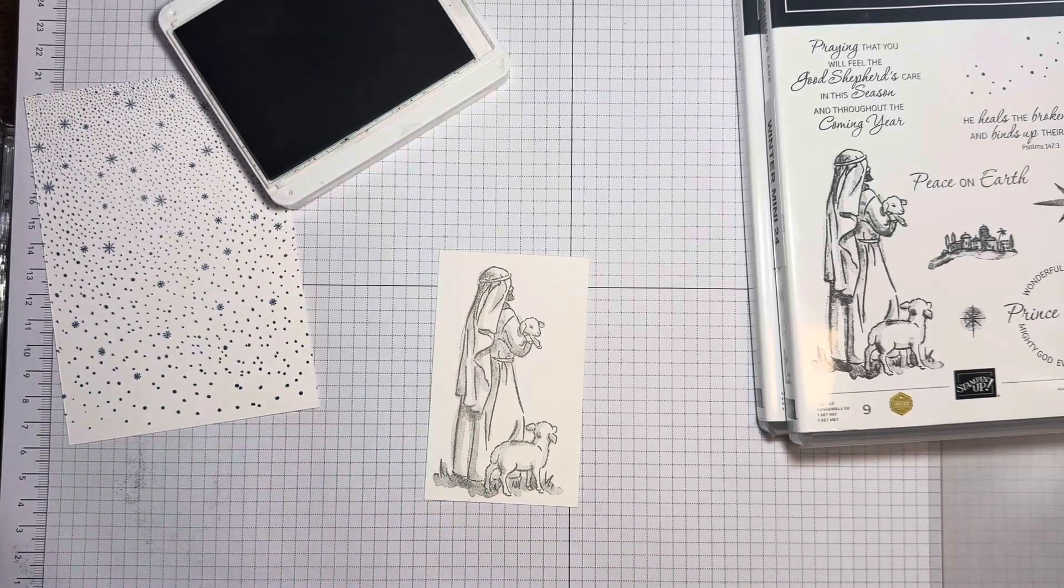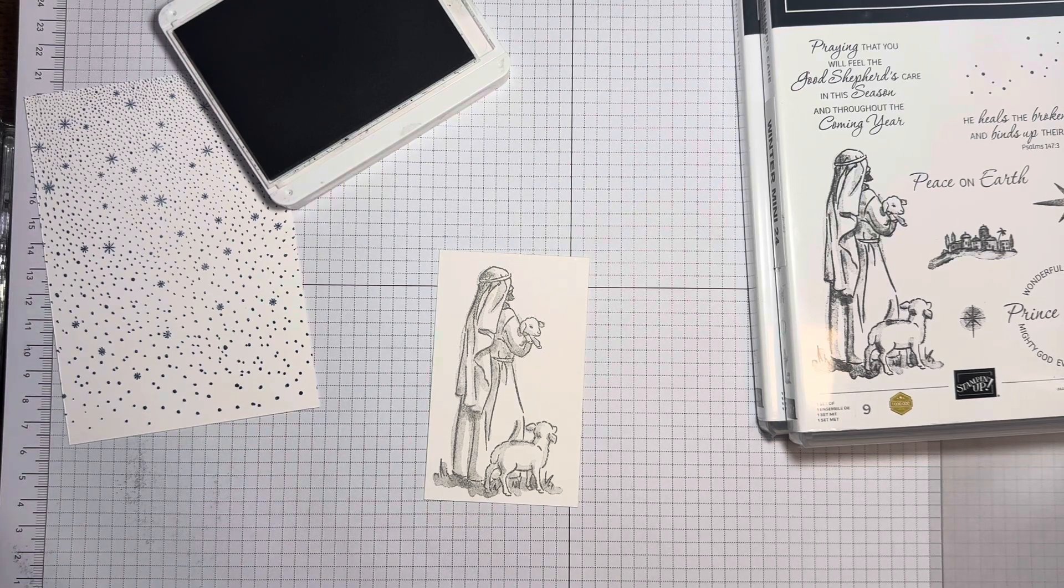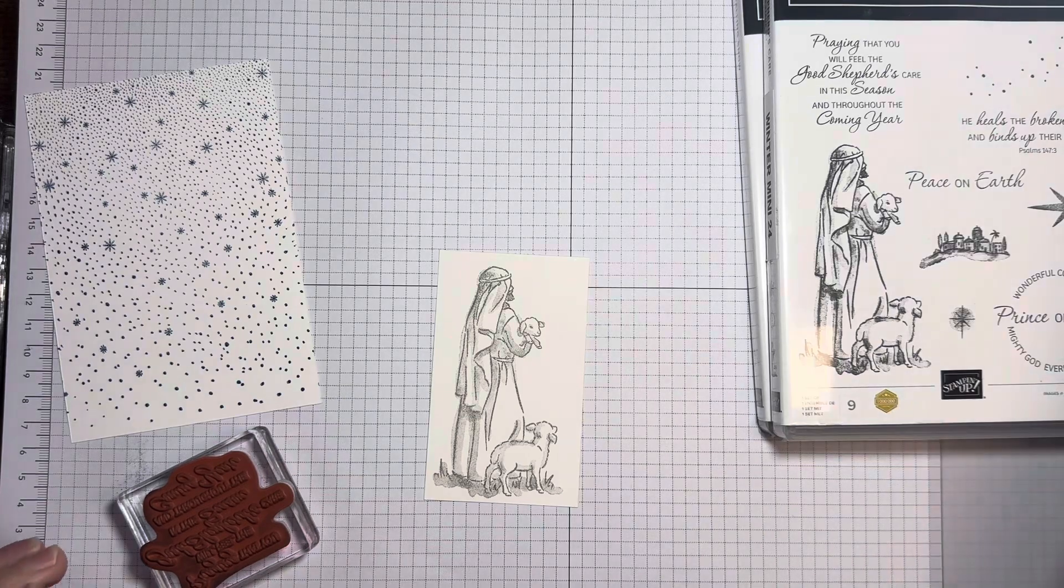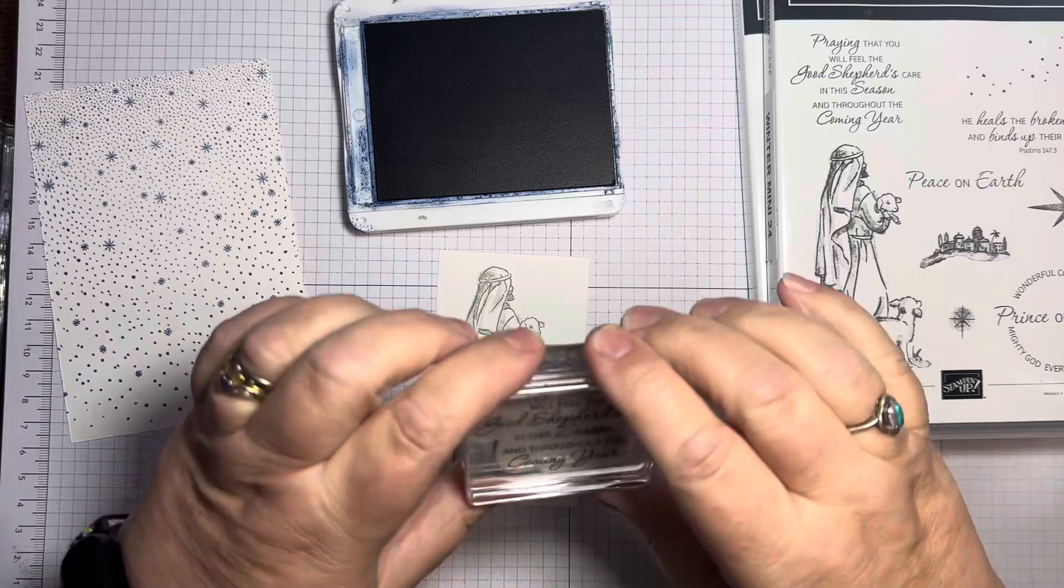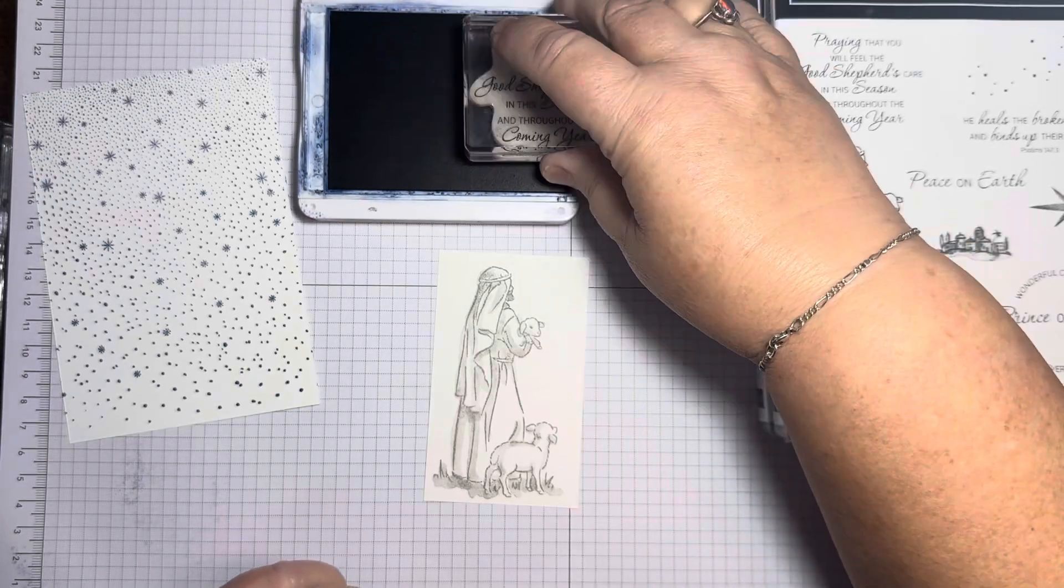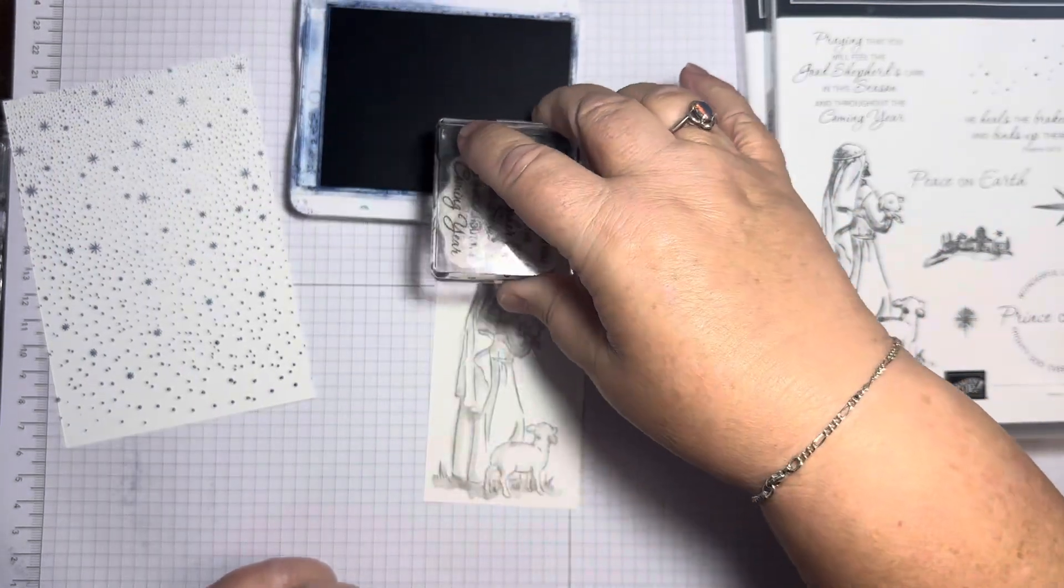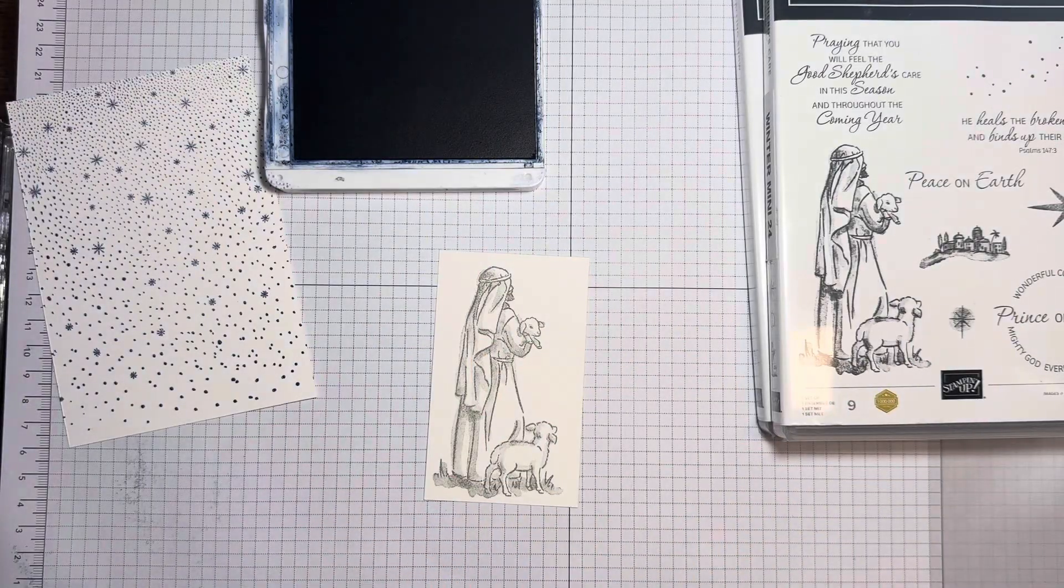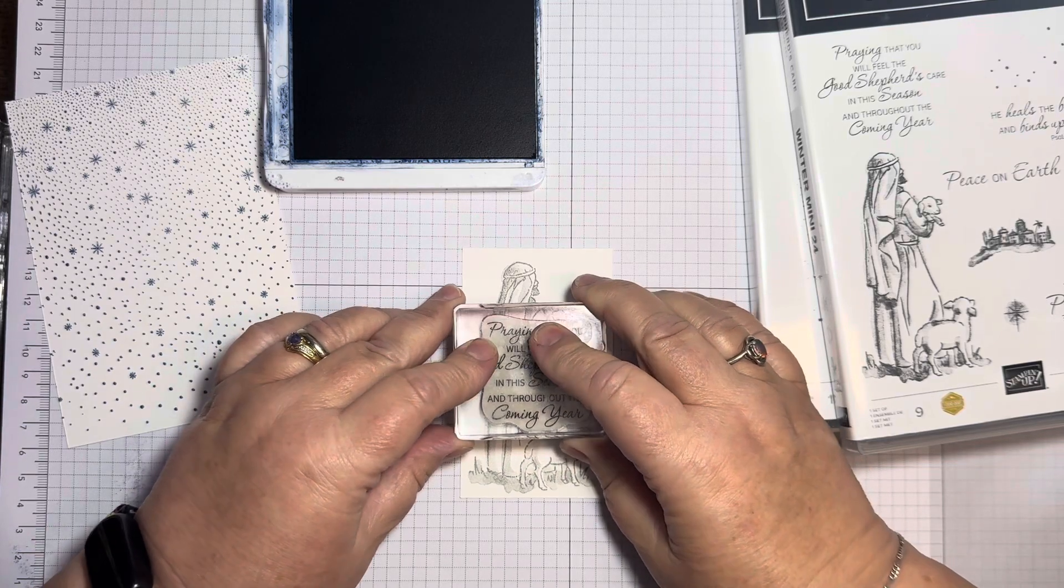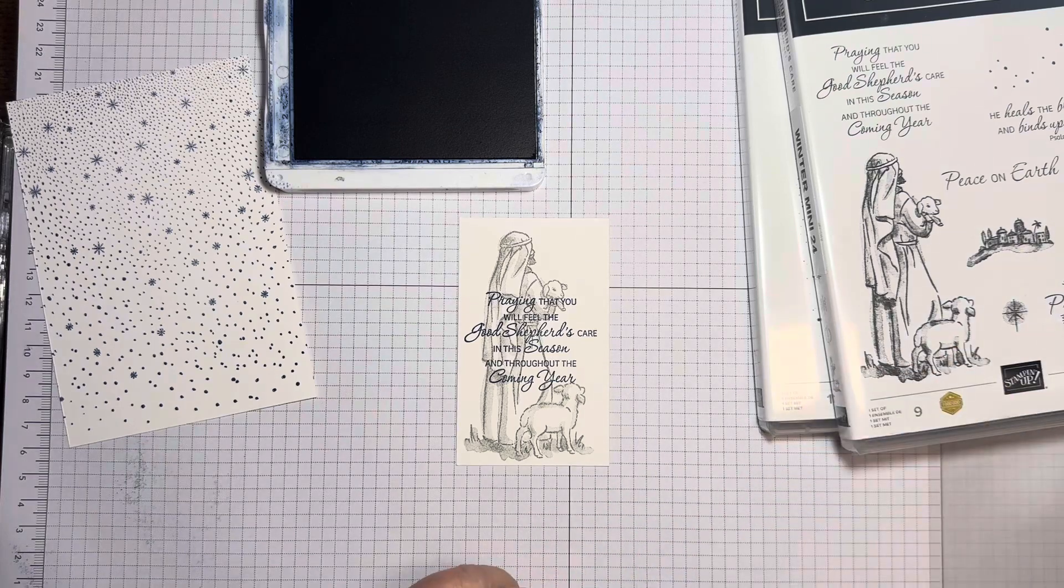This one I'm choosing to use this larger sentiment. Praying that you feel the good shepherd's care in this season and throughout the coming year. And another one she has used peace on earth in the same way. Her card is much more elaborate than mine. She's got gold embossed, and she's put the star in, etc. She hasn't used that background. Oh now, I have inked that up the wrong color. Oh dear. I do it all the time because I'm blethering, not concentrating.